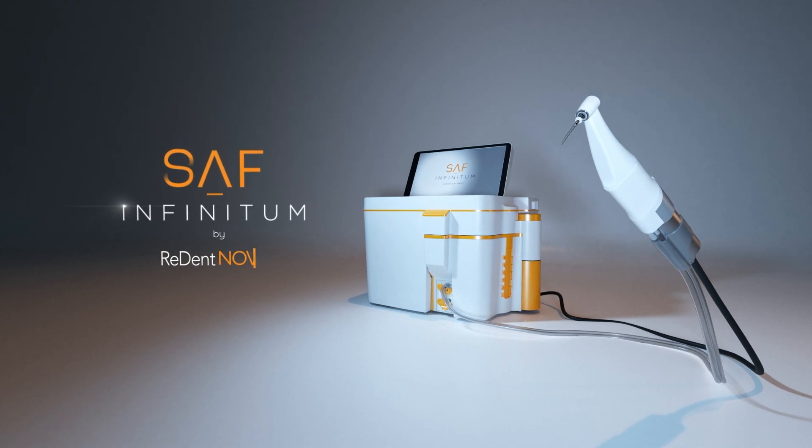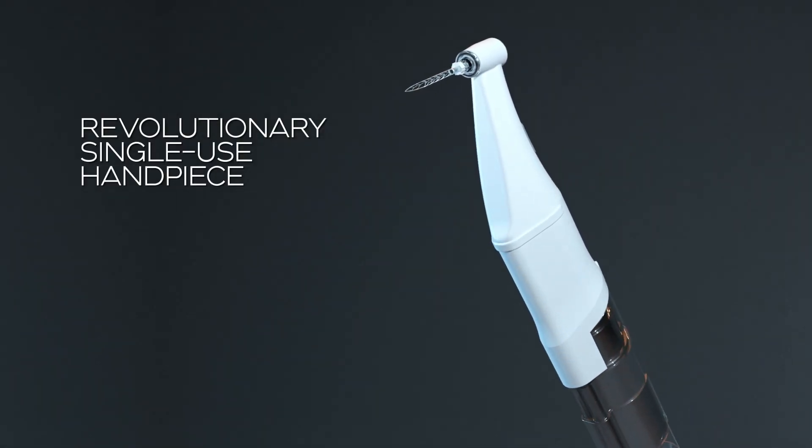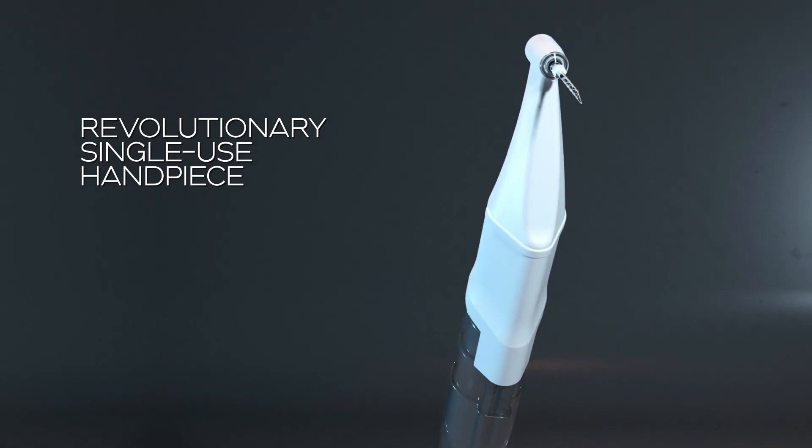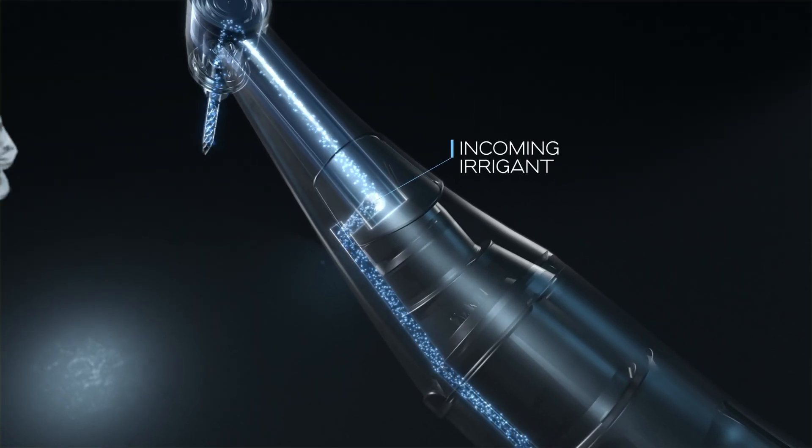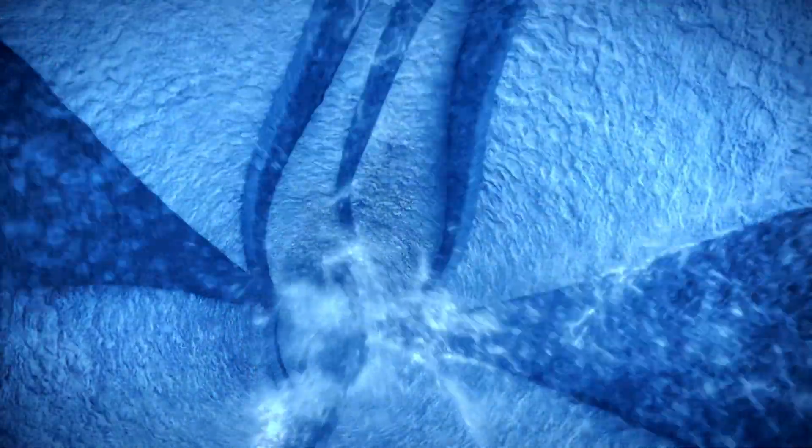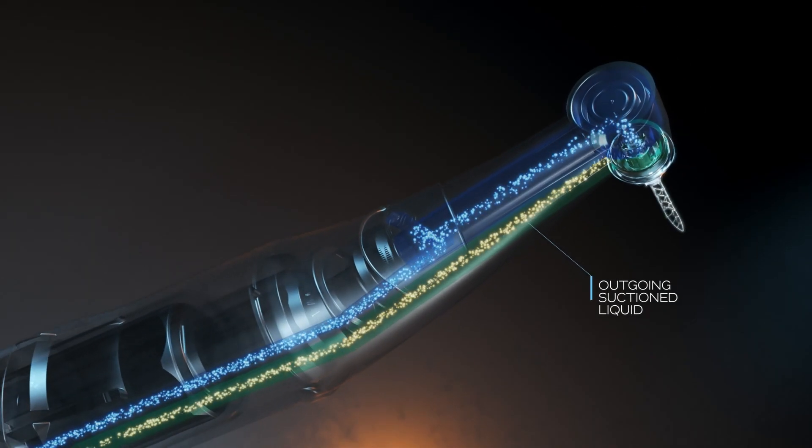SAF Infinitum provides the means to implement the SAF system philosophy. An advanced revolutionary single-use handpiece compatible with ISO-type digital micromotors consistently delivers the irrigation fluid from the main device directly into the self-adjusting file and intermittently suctions the excess fluids from the treatment area through a separate channel, clearing the treatment area for the dentist.